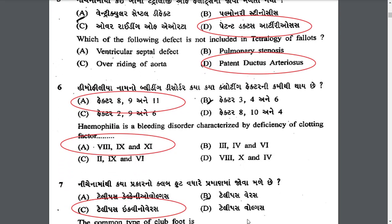Hemophilia is a bleeding disorder caused by deficiency of which clotting factors? Hemophilia is a bleeding disorder characterized by deficiency of clotting factors 8, 9, and 11.